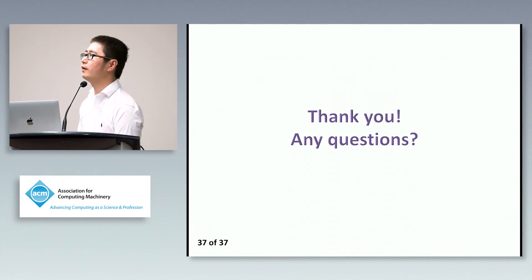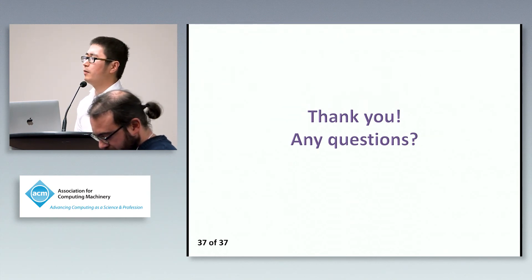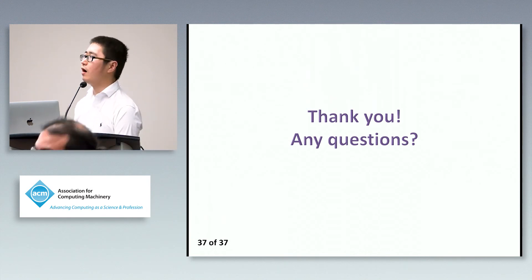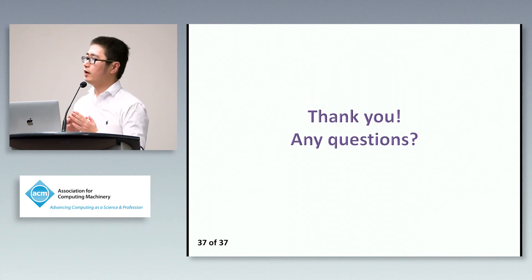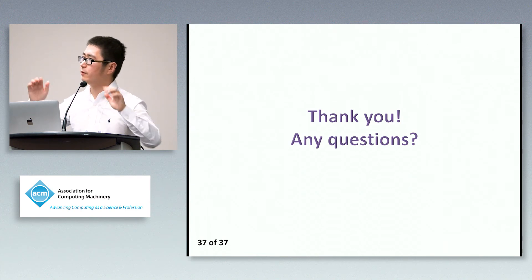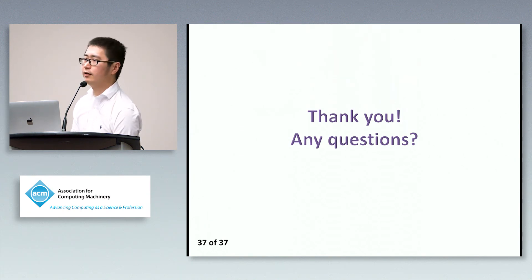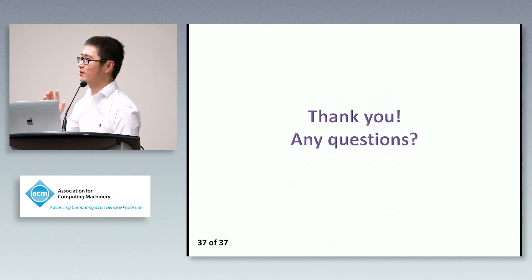Audience: Nice talk, two questions. First, I saw you use CNN in your evaluation — could you show a more detailed model of that CNN? Speaker: In our paper we have the reference. We randomly selected articles from several websites, and that figure shows one example — we used a piece of CNN news for demonstration. Audience: You mean CNN the website, not CNN the learning model? Speaker: Yes, that is CNN the website — news from CNN. Sorry for the confusion.